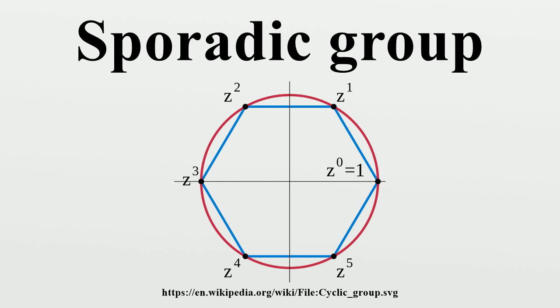The Tits group T is sometimes also regarded as a sporadic group, which is why in some sources the number of sporadic groups is given as 27 instead of 26. In some other sources, the Tits group is regarded as neither sporadic nor of Lie type.